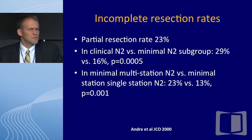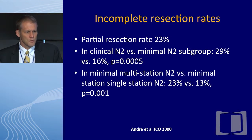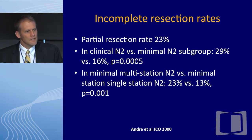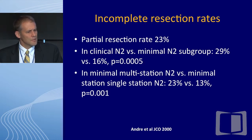What is the risk of taking these patients to surgery? Looking at the incomplete resection rate, it's 23% overall in this trial. For clinical N2 nodes, 29% of patients underwent an incomplete resection. For minimal multi-station N2 disease versus minimal single-station disease, 23% underwent an incomplete resection.